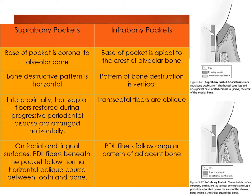Differences between suprabony and infrabony pockets: suprabony pockets are situated above the bone, while infrabony pockets involve bone apical to the crest of the alveolar bone. The bone destruction pattern in suprabony pockets is more horizontal, whereas in infrabony pockets it is angular. Interproximally, the transseptal fibers are arranged horizontally in suprabony pockets — same as the pattern of bone destruction — whereas in infrabony pockets the fibers are oblique. On facial and lingual surfaces, periodontal fibers beneath the pocket follow a horizontal-oblique pattern in suprabony pockets but follow an angular pattern in infrabony pockets.